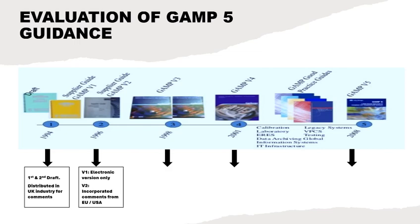GAMP5 guidance focused on how suppliers built the software and validated it. In 1998, GAMP5 version 3 was published. In version 3, they separated the responsibility of the user and supplier to validate the system.